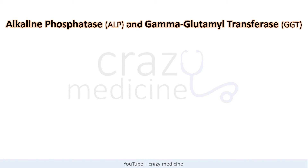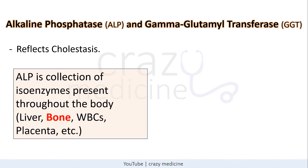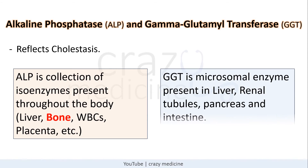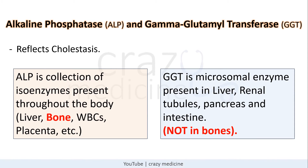Now coming to alkaline phosphatase (ALP) and gamma glutamyl transferase (GGT). Both enzymes reflect cholestasis, i.e., obstruction to bile flow. ALP is a collection of isoenzymes present throughout the body — in the liver, bone, WBCs, placenta, etc. GGT is a microsomal enzyme present in the liver, renal tubules, pancreas, and intestine, but not in bones.